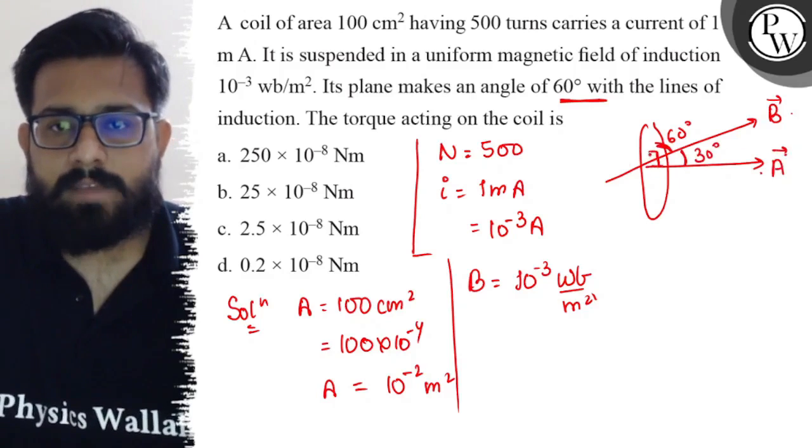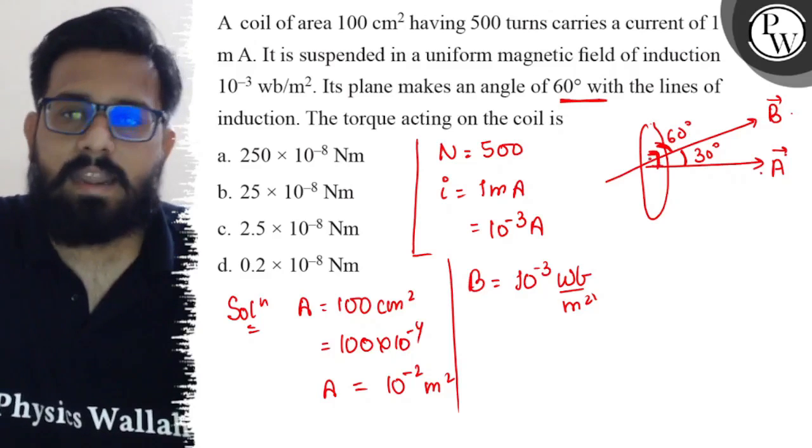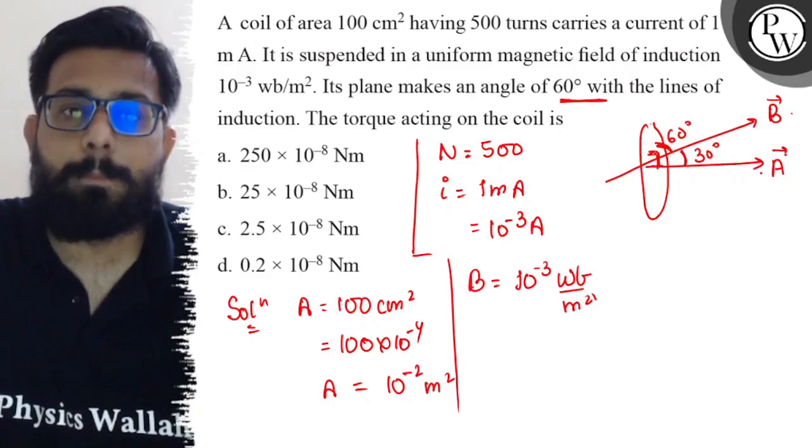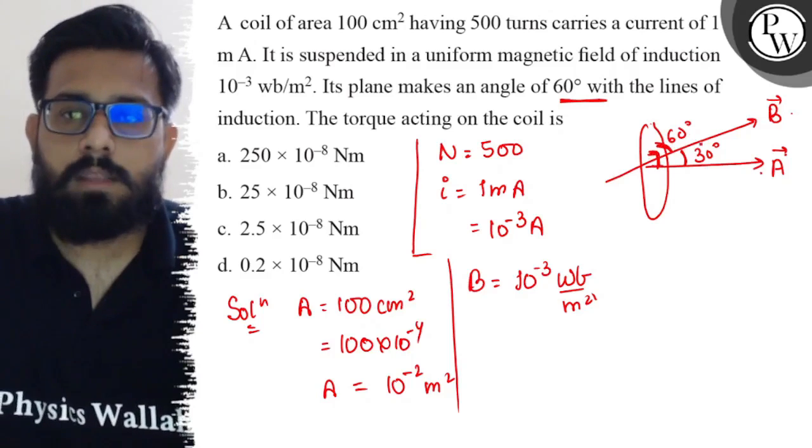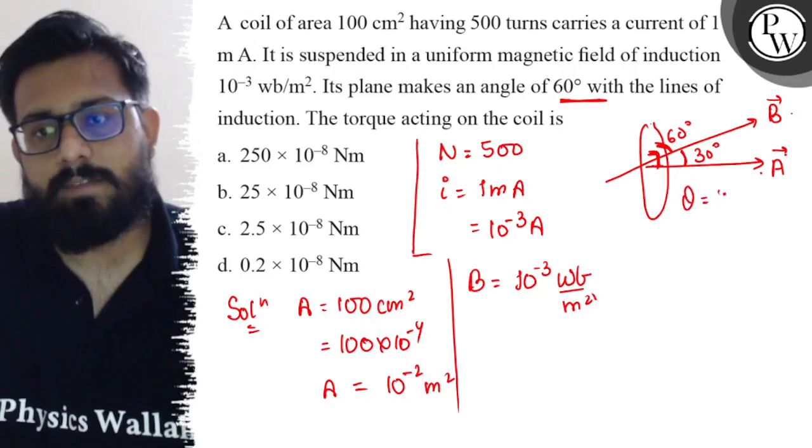Area vector is perpendicular to the plane of the coil and the magnetic field is making an angle of 60 degrees with the plane of the coil. So the angle between area vector and the magnetic field comes out to be 30 degrees. So here the value of theta is 30 degrees.